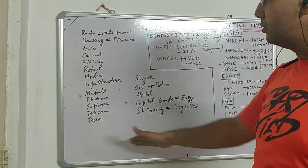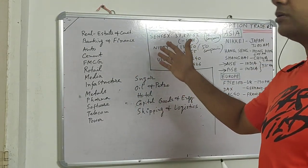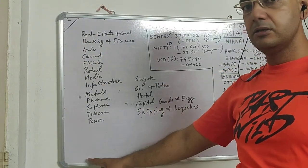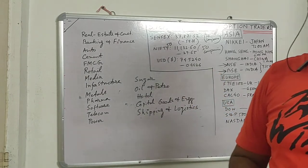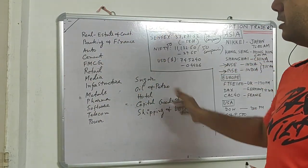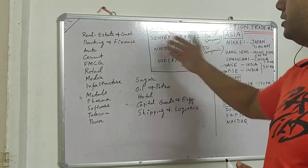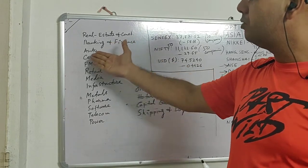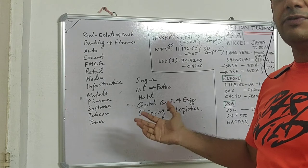The index is a representation of the entire market — all sectors should be represented. It's not that only banking companies are included. If out of all sectors the top 50 were all banking companies, the governing body would not include all 50 banking companies. There should be well representation from all sectors — perhaps 10 banking, 2 real estate, 2 auto, and so on. You can find the full breakdown on the NSE or BSE website.